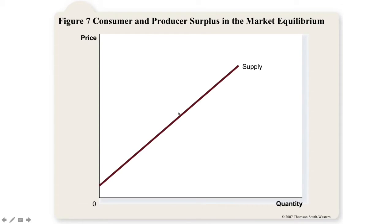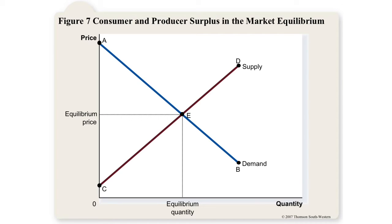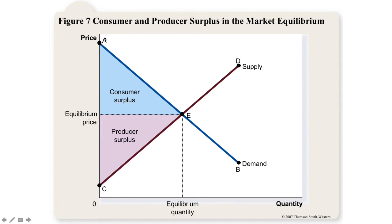Total surplus is straightforward to find. Using the supply and demand curves, find equilibrium. Consumer surplus is the area above the equilibrium price and below the demand curve. Producer surplus is the area below the equilibrium price and above the supply curve. Total surplus equals consumer surplus plus producer surplus, or you can calculate it as the area of the full triangle using one-half base times height.